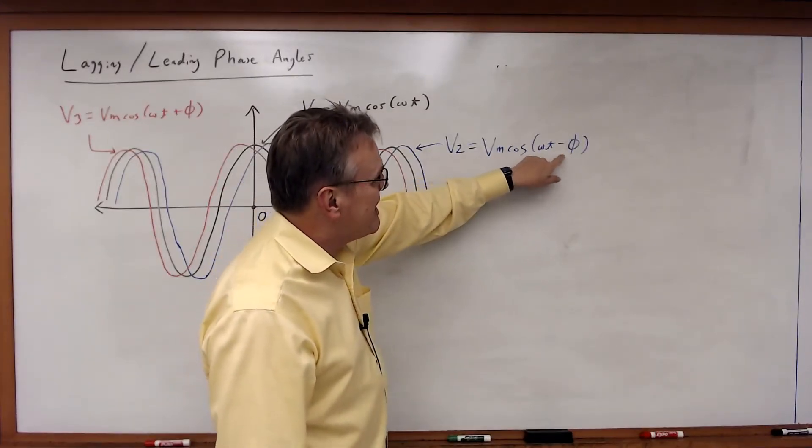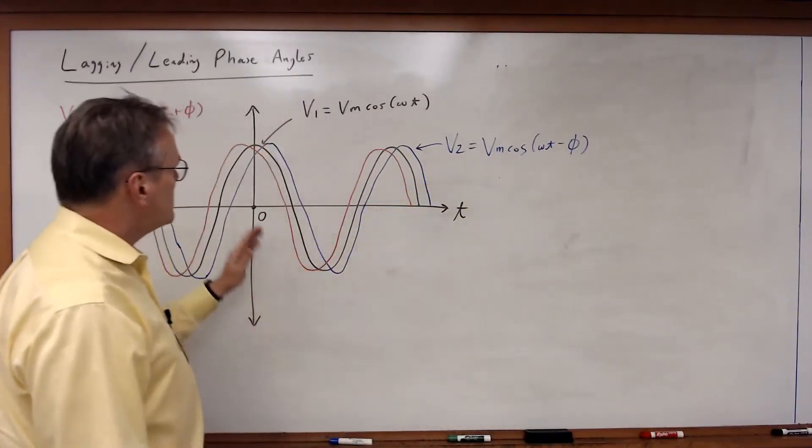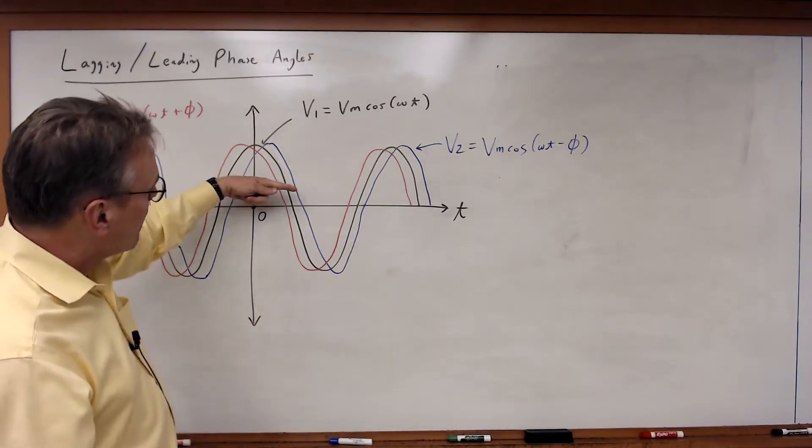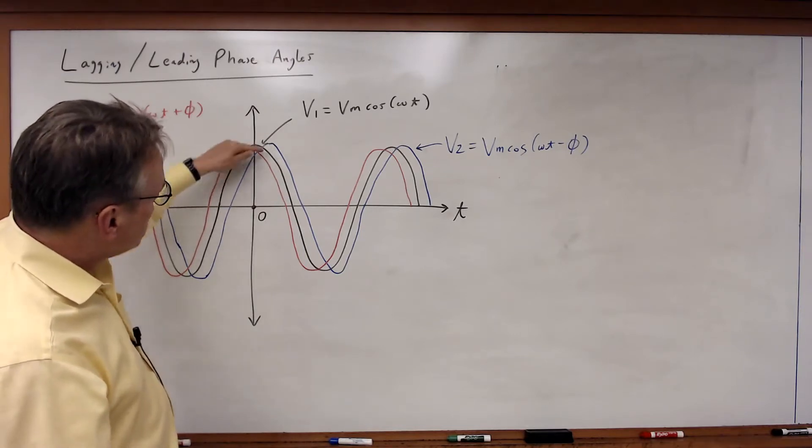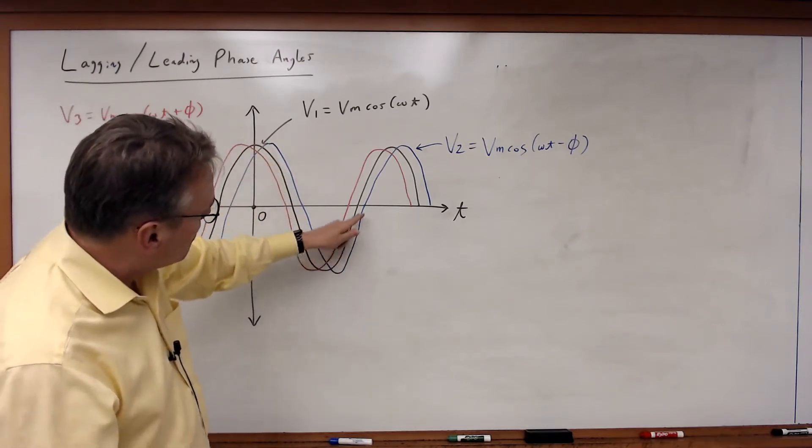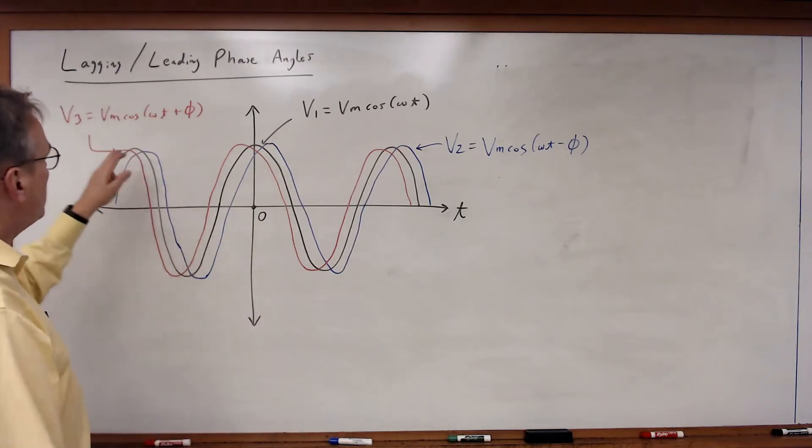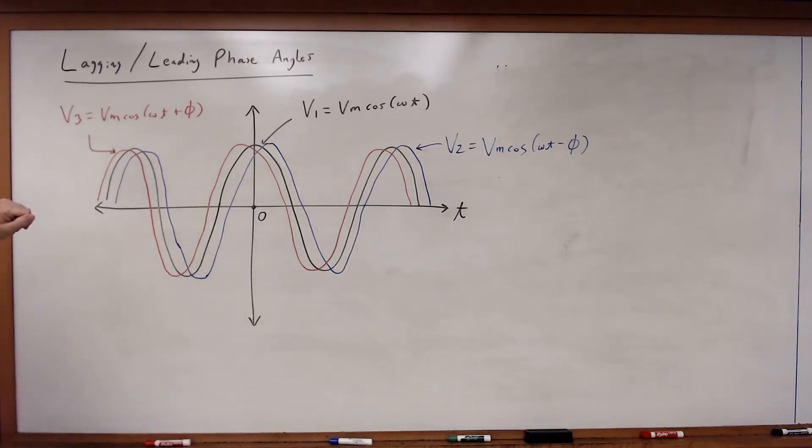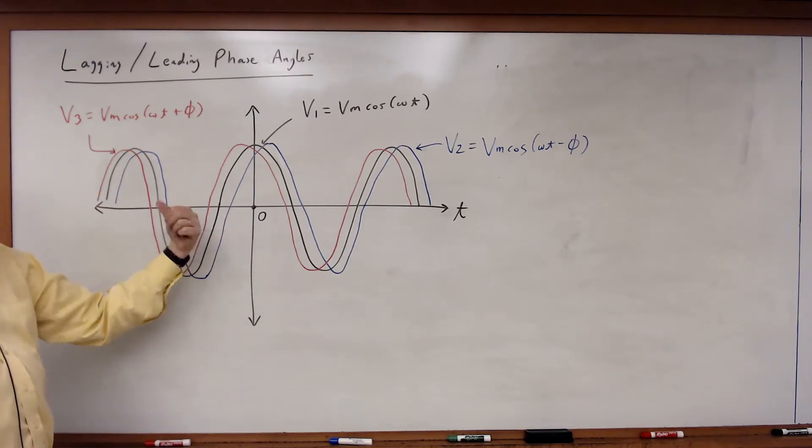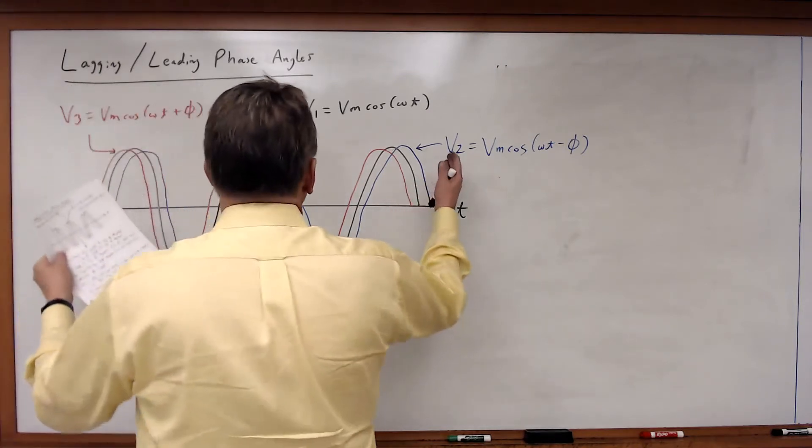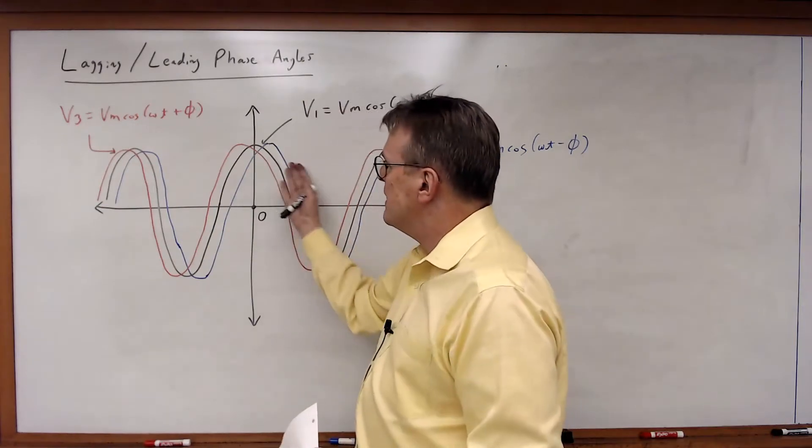Then I have a second waveform, v2 equals Vm cosine omega t minus φ. So in this case I'm shifting the waveform to the right on the time axis and it peaks and then basically follows the v1 waveform. Then I have the v3 waveform which is time shifted in the opposite direction, Vm cosine omega t plus φ. So v2 and v3 are just slightly shifted versions along the time axis of v1.